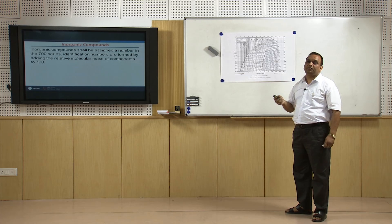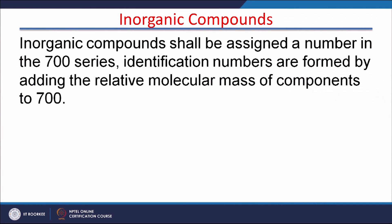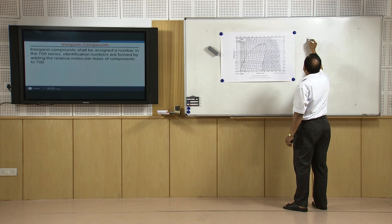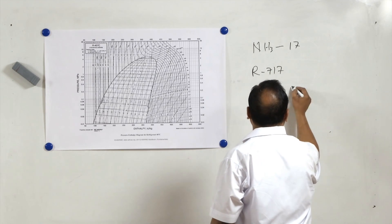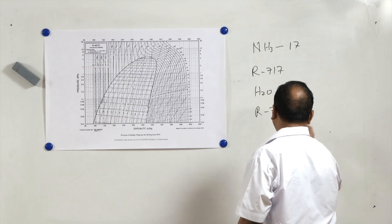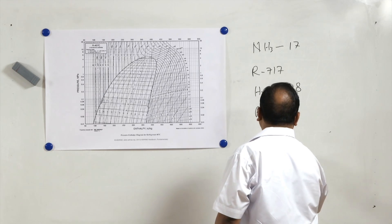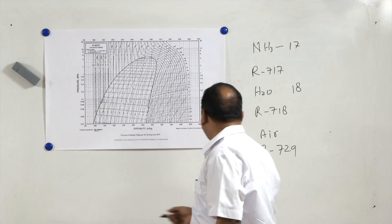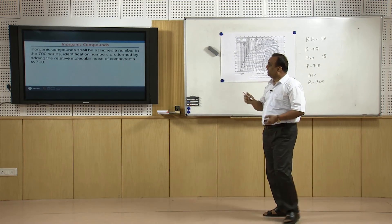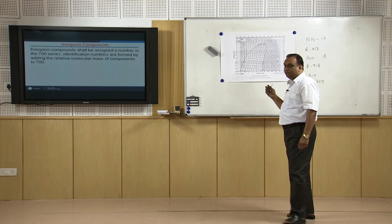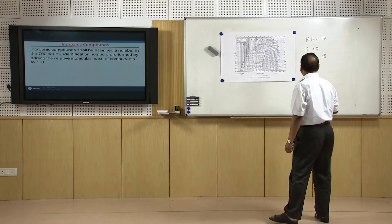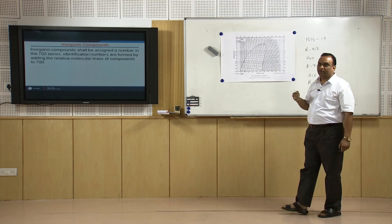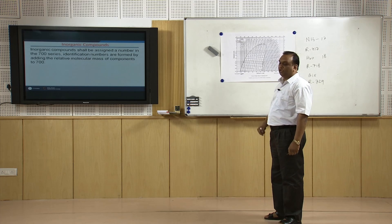Inorganic compounds like ammonia are also used as refrigerants and are covered under the 700 series. The nomenclature is simple: ammonia (NH3, atomic weight 17) is R717; water (H2O, atomic weight 18) is R718; air is R729; argon is R740. Nowadays inorganic compounds are becoming popular as scientists seek natural refrigerants, and use of inorganic compounds is intended to increase in the near future to replace existing chemicals in the refrigeration industry.